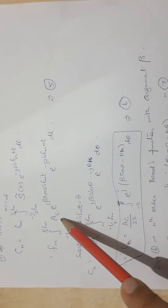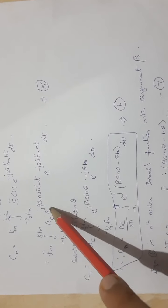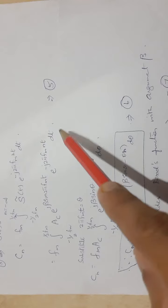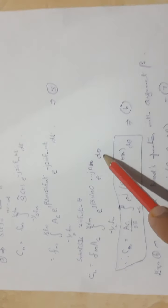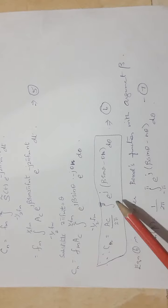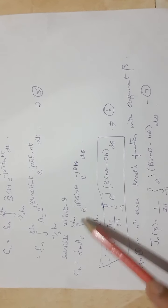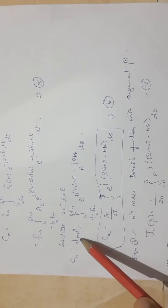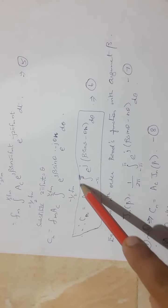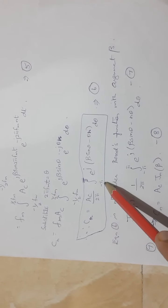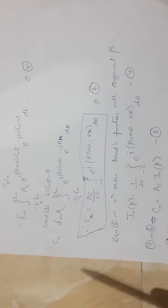For simplification, we substitute θ = 2π·fm·t, so equation 5 becomes Ac·e^(jβ·sin(θ)) · e^(−jnθ), and dt is converted in terms of dθ. Since Ac is a constant, it is taken out. Also, fm = ωm / (2π), so 2π appears in the denominator and the integral limits change from −π to +π.